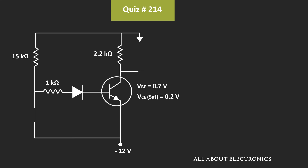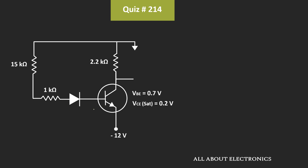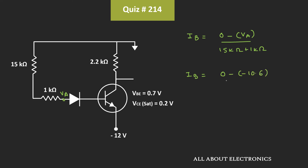So now if we see the equivalent circuit, it will look like this. For this circuit, the base current Ib will be equal to (0 − Va) / (15kΩ + 1kΩ). We have seen that the voltage Va is equal to minus 10.6V. That means base current Ib is equal to (0 − (−10.6V)) / 16kΩ, which is equal to 0.662mA.